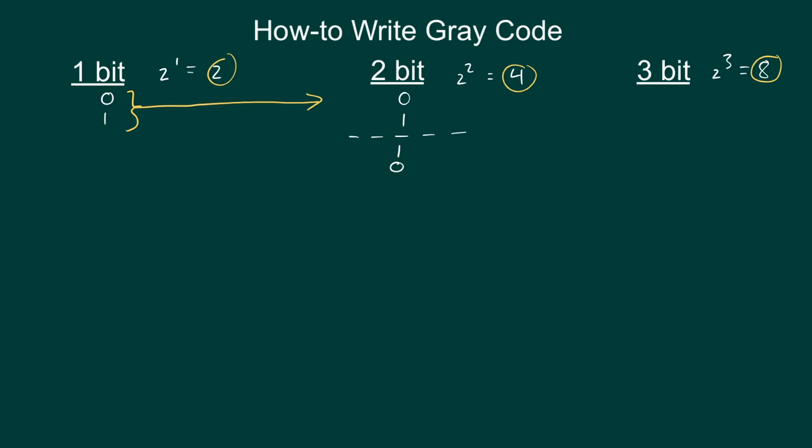And to do that I'm going to add 0's to the top half for everything above the line. And I'm going to add 1's to everything below the line. So now I have successfully written 2-bit gray code.